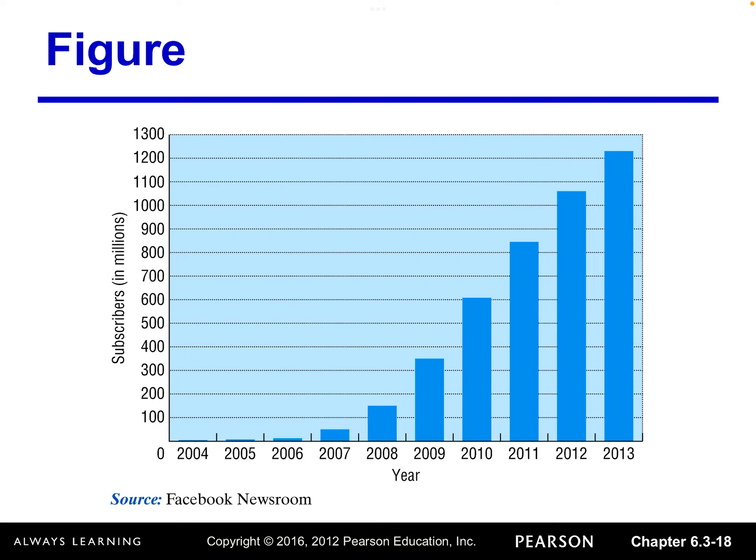What kind of exponential data do we see in real life? For example, cell phone subscribers or Facebook subscribers grow exponentially. Another example is the spread of disease, like COVID-19, which spreads very fast. The number of people affected by the disease grows exponentially. That's the real-life application of exponential data.